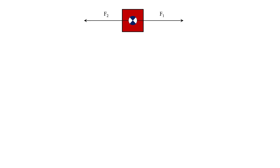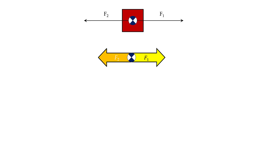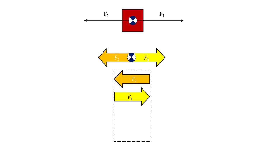Recall from our discussion on linear kinetics, the tug of war example, where we had a box being pulled to the right by F1 and pulled to the left by F2. We said that if F1 and F2 were equal in magnitude and opposite in direction, and if we put the tip of one to the tail of the other, the net force, or the effective force, would be zero — a zero vector. And if we had a zero effective force, we would have a zero acceleration. In a case where the box was stationary, the box wouldn't move.